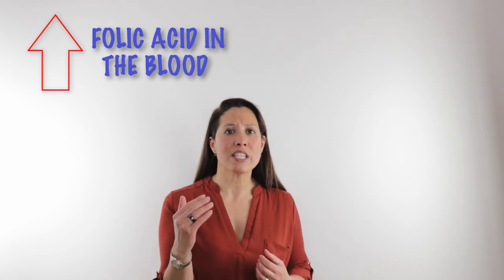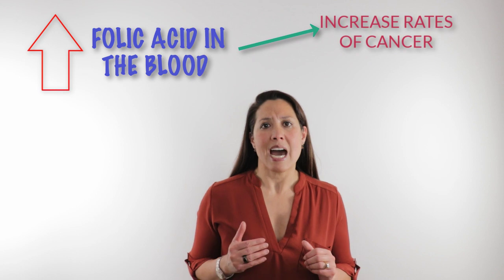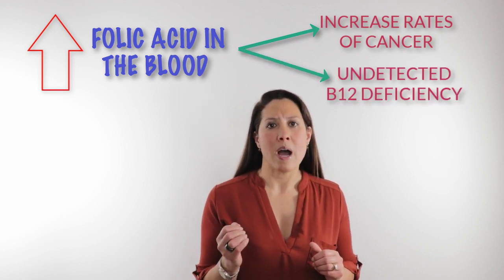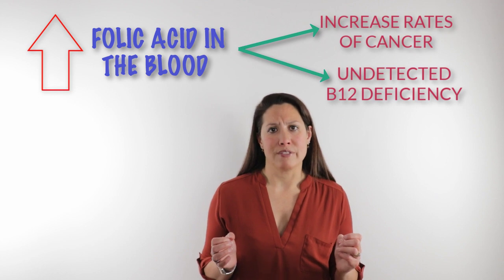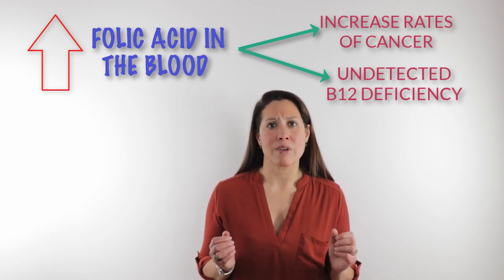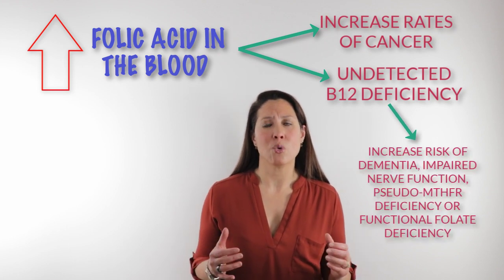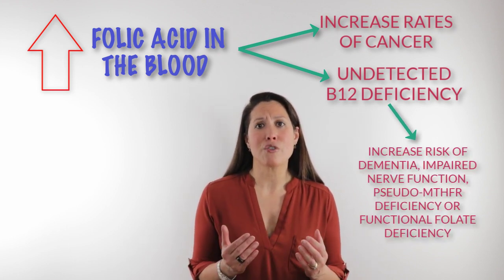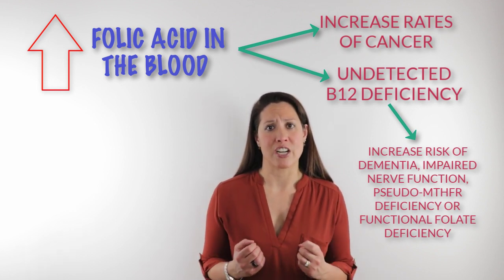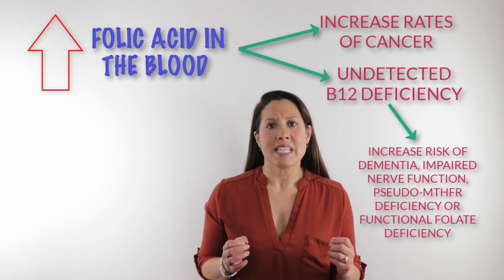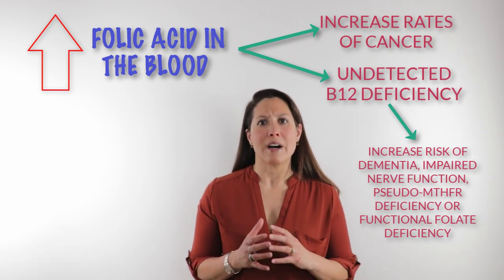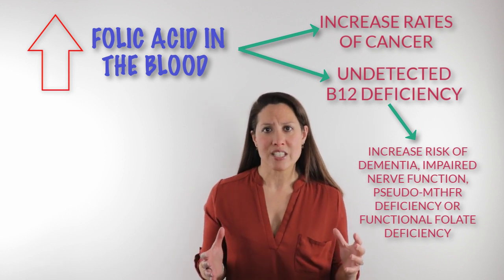It can increase our rates of cancer. It can lead to an undetected B12 deficiency, and with this undetected, untreated B12 deficiency, this can increase our risk of dementia. It can also lead to problems in terms of our nerve function — we can have impaired nerve function from these B12 deficiencies. This can lead to a pseudo-MTHF deficiency and a functional folate deficiency. So overall, this folic acid can actually be harmful to our systems.